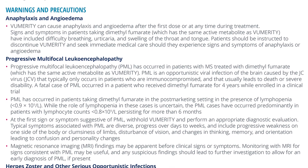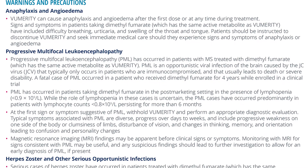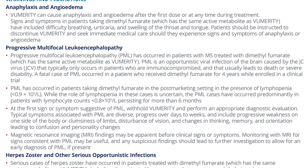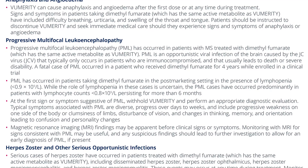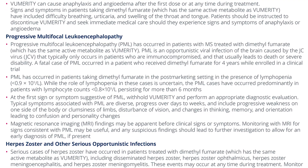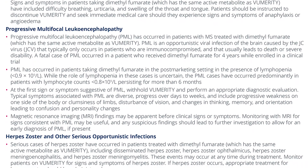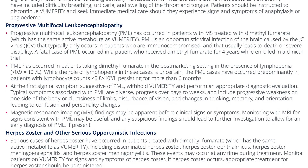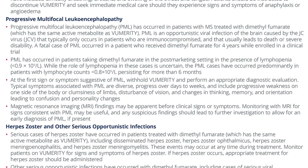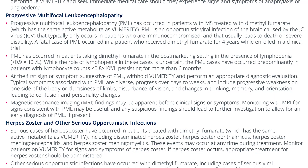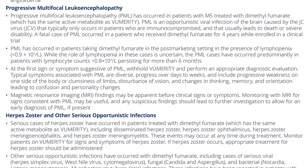At the first sign or symptoms suggestive of PML, withhold Vumerity and perform an appropriate diagnostic evaluation. Typical symptoms associated with PML are diverse, progress over days to weeks, and include progressive weakness on one side of the body or clumsiness of limbs, disturbance of vision, and changes in thinking, memory, and orientation, leading to confusion and personality changes. MRI findings may be apparent before clinical signs or symptoms. Monitoring with MRI for signs consistent with PML may be useful, and any suspicious findings should lead to further investigation to allow for an early diagnosis of PML if present.